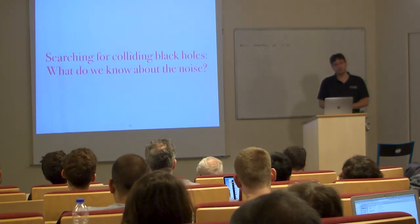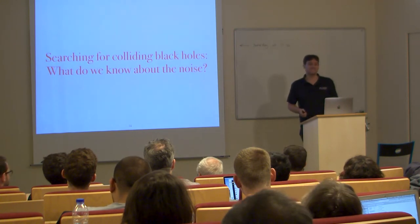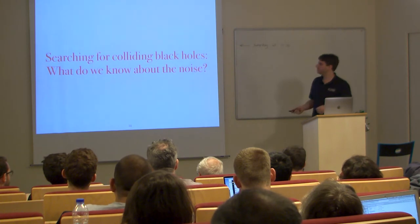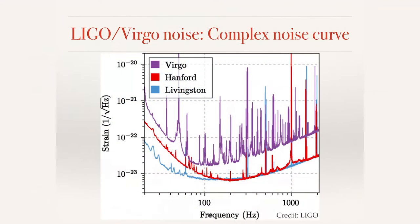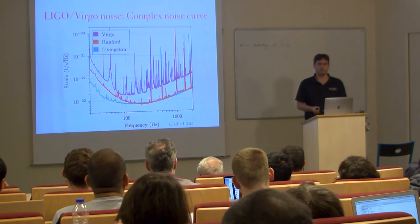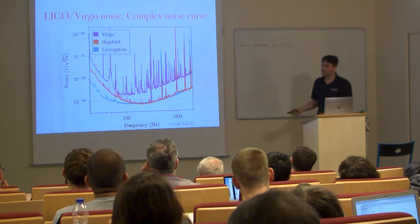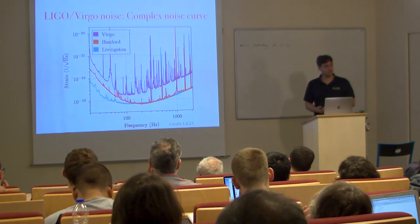Shifting from signal models, I want to introduce what we understand about the noise. The noise curves of the instruments are quite complex — there's a broad sensitivity band shaped by shot noise, thermal noise, and seismic noise, but also a large number of spectral lines and combs caused by harmonics, power lines, calibration lines, and so on. We need to accurately measure this complex noise curve to make the searches work.